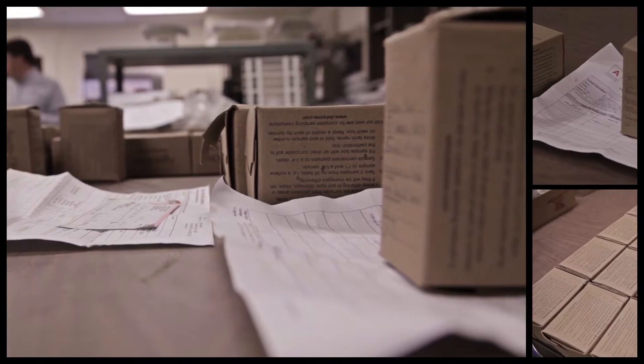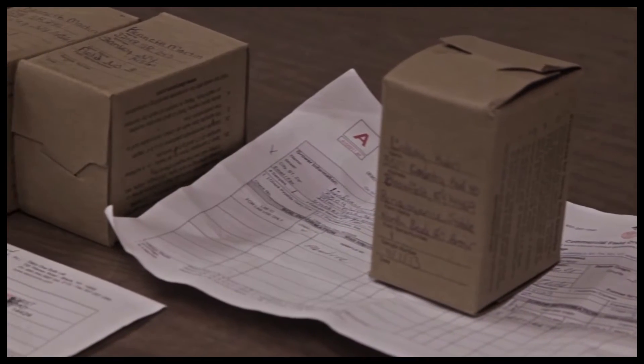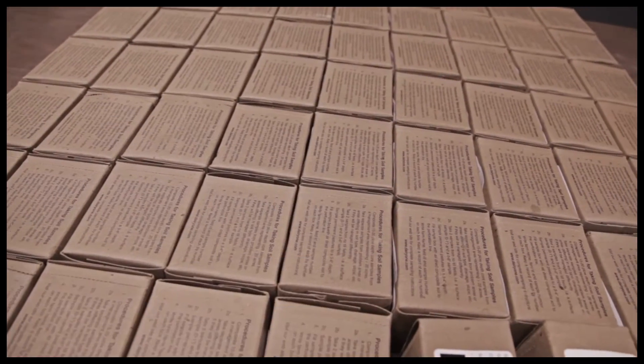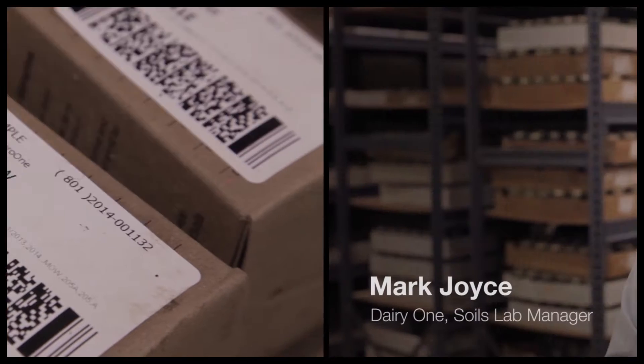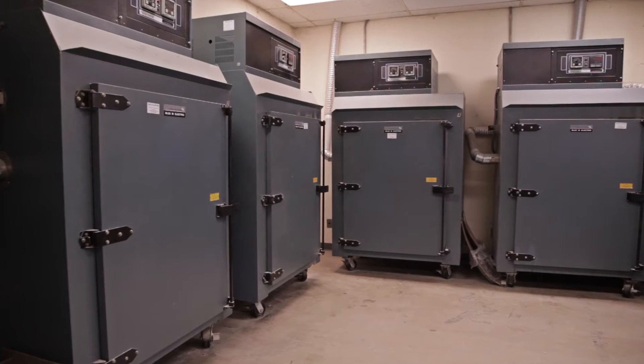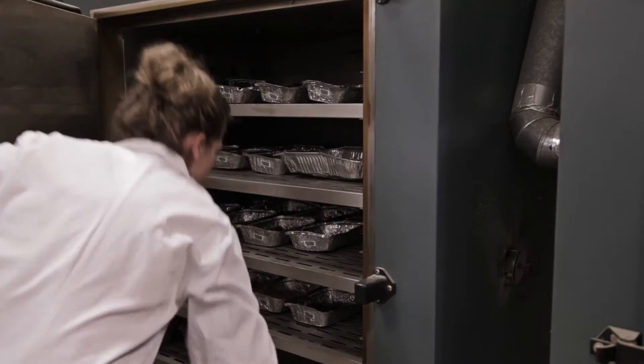When soil samples come in, they come in a variety of ways. They may come in a bag or in a box. We generally prefer boxes. We sign them in and put them in racks of 35 samples into a drying oven for two days.